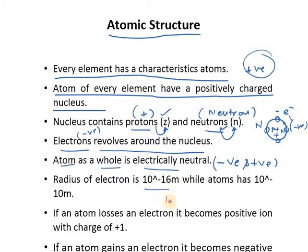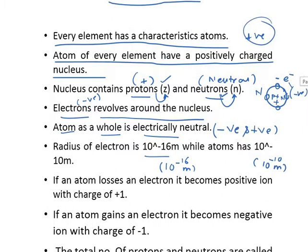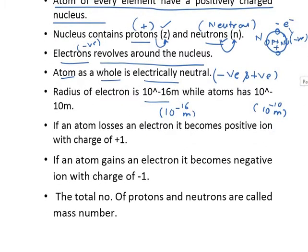The radius of an electron is on the order of 10 to the power of minus 16 meters. Can you imagine — 10 to the power of minus 16 meters is the small radius of the electron, whereas the atom has a radius of 10 to the power of minus 10 meters. So the key particles to remember are electrons, protons, neutrons, and their segregation.